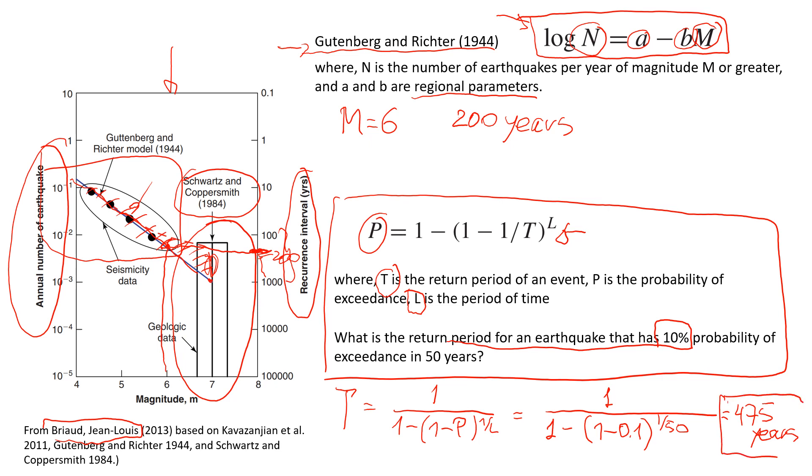So that will be the answer. The return period of an earthquake that has probability of 10% of exceedance in 50 years will be 475 years. Well, thanks for watching this video. Have a nice day. Bye.